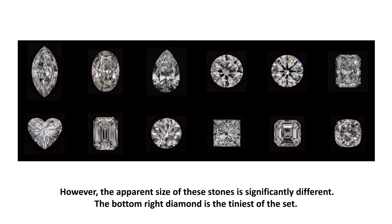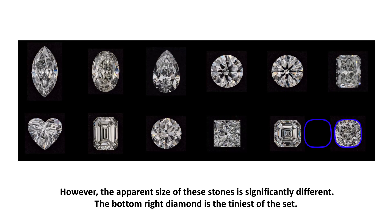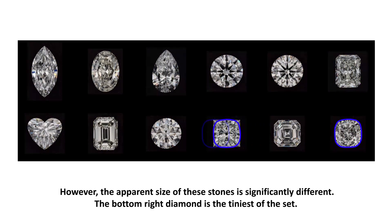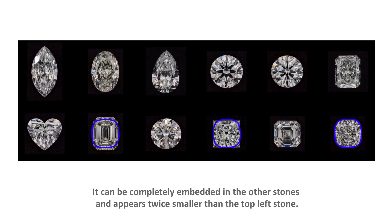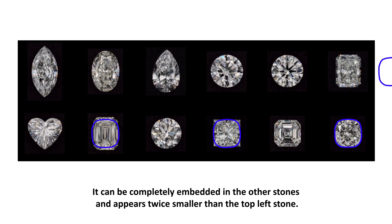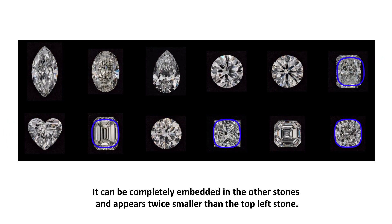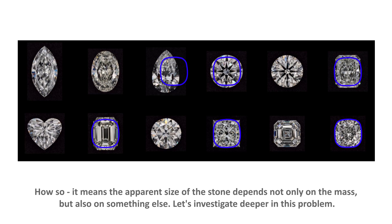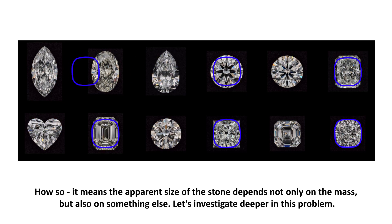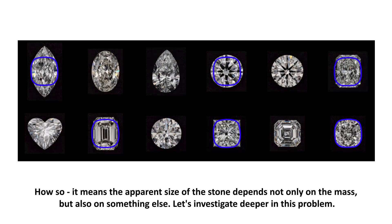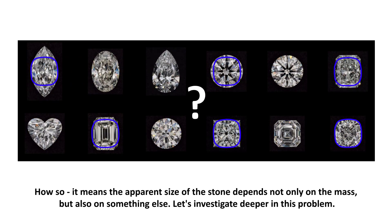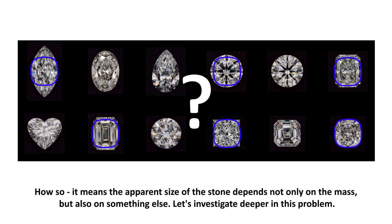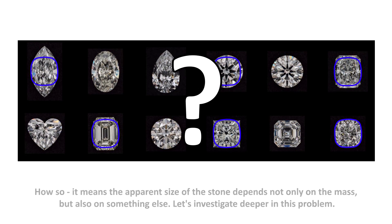However, the apparent size of these stones is significantly different. The bottom right diamond is the tiniest of the set — it can be completely embedded in the other stones and appears twice smaller than the top left stone. How so? It means the apparent size of the stone depends not only on the mass, but also on something else. Let's investigate this problem deeper.